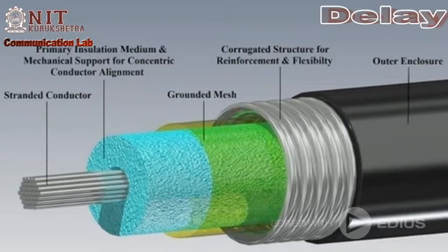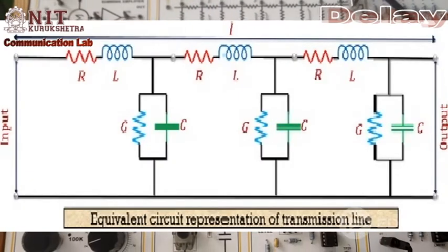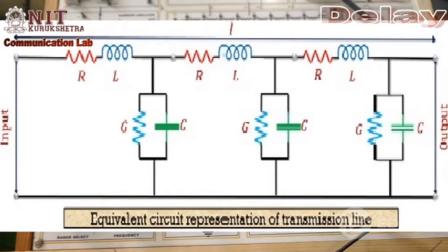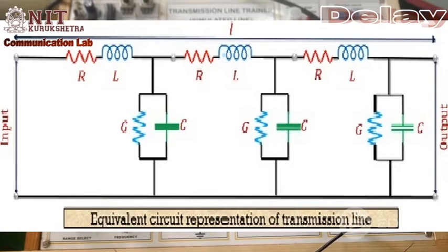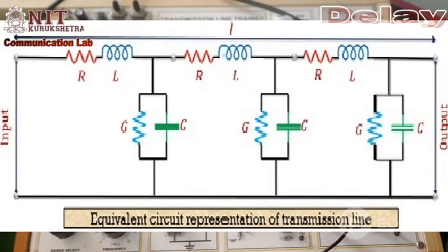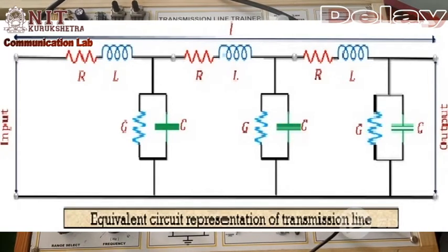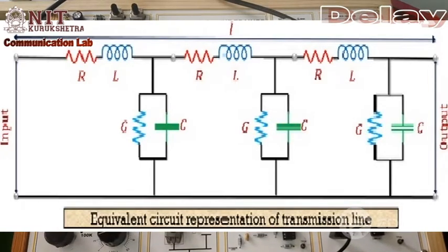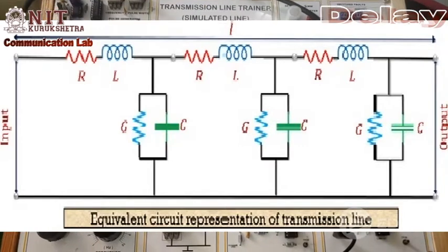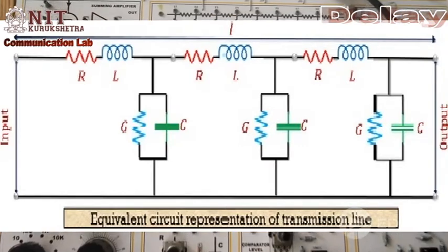There is an inductive effect also, so there will be an inductor. And since the insulator may not be perfect, there is leakage conductance. And the line itself may not be perfect, so there will be resistance. Therefore, we consider a transmission line as series resistance and inductance, and parallel capacitance and conductance — distributed continuously along the line.